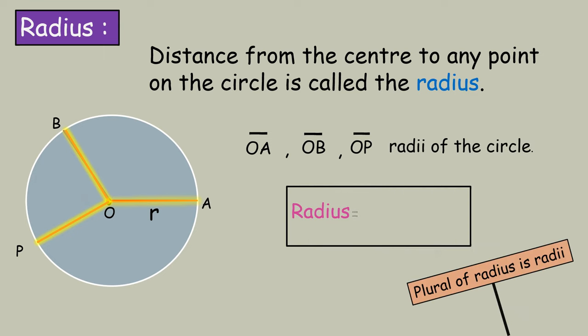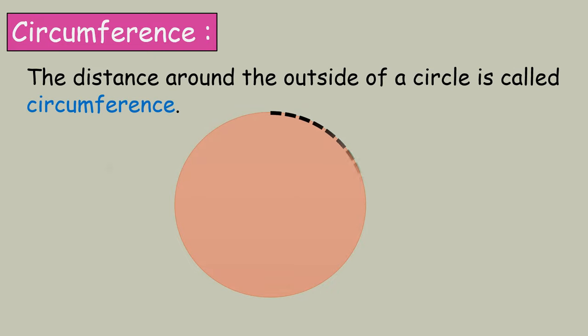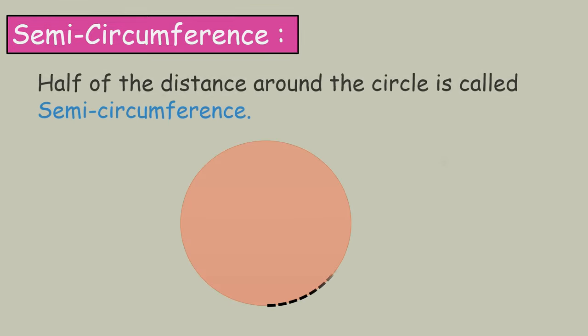Here, radius is equal to half of the diameter. Circumference: the distance around the outside of a circle is called circumference. Semi-circumference: half of the distance around the circle is called semi-circumference.